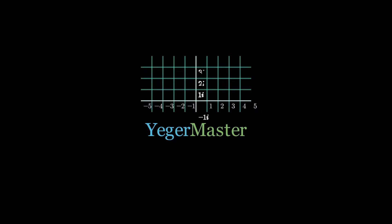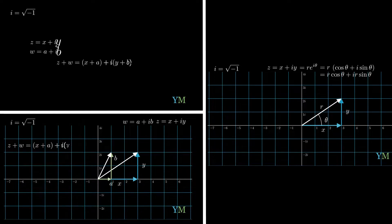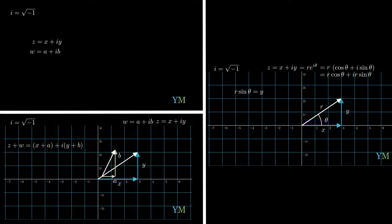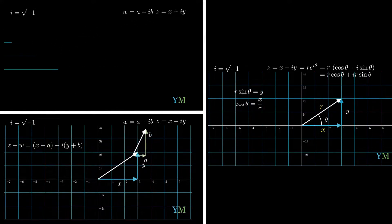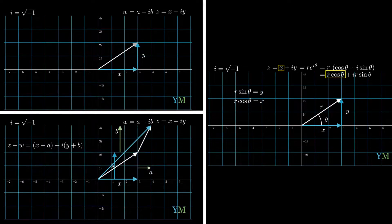In our previous lesson, we learned about the complex number. We talked about its algebraic presentation and learned how to add and subtract between complex numbers. Not only that, we learned how to see the complex number. And we finished the lesson learning about the polar presentation that has major advantages when it comes to multiplying complex numbers. In this lesson, we'll see and understand exactly what the polar presentation is and how it helps us.